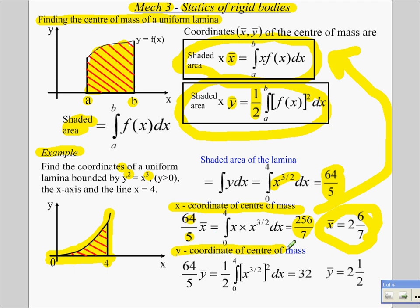Y-coordinate of center of mass. Again, the shaded area times y bar is a half times the integral of f of x squared dx. So we square that, integrate between the limits, remembering to half it. And we get y is 2 and a half. And again, doesn't look too bad. 2 and a half.